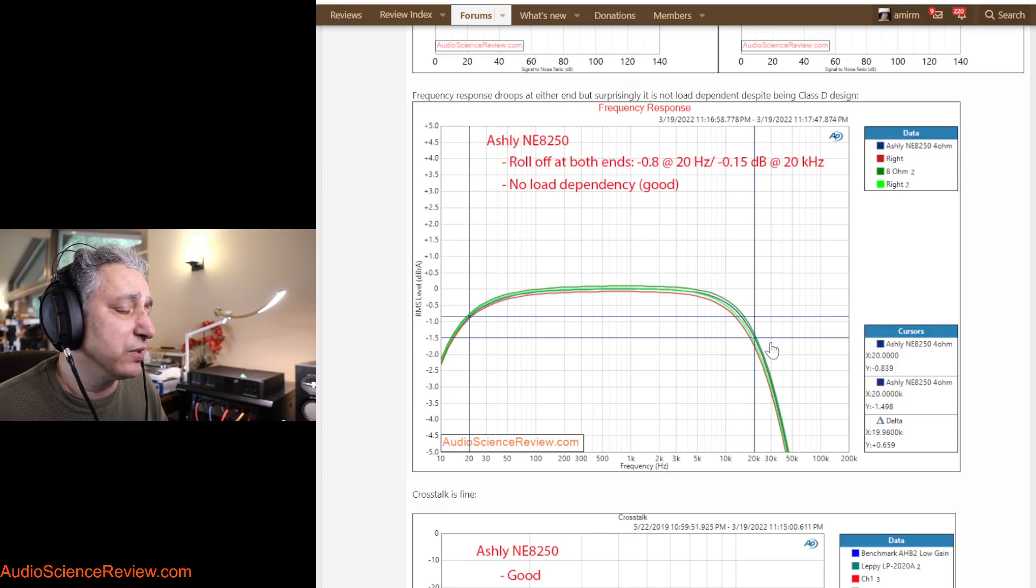The good news is that even though they say it's class D, when I switch the loads from 4-ohm to 8-ohm, the frequency response did not change. Many less advanced class Ds will then show an overshoot or a change in response when I switch from 4-ohm to 8-ohm. There's no dependency in here.